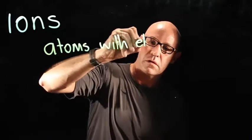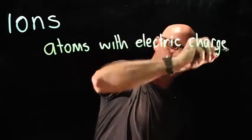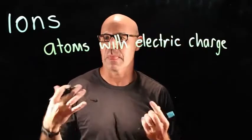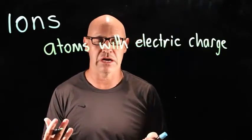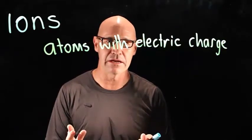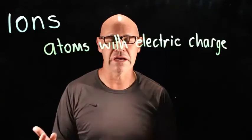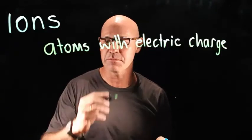Ions are atoms with an electric charge. They form this state with an electric charge by gaining or donating electrons. Let me give you an example.